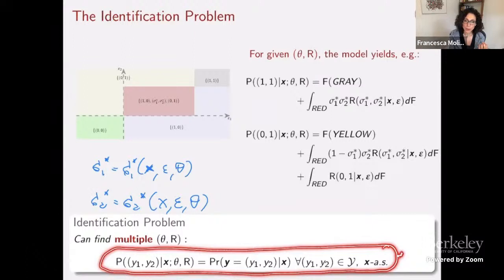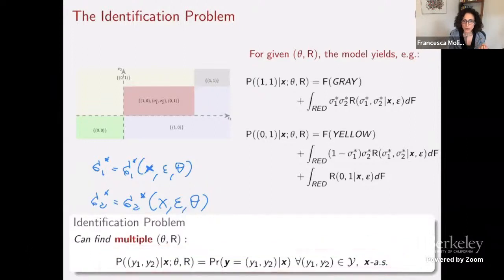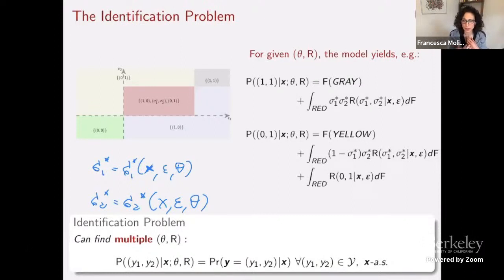However, in practice the selection mechanism is a nasty object — an infinite dimensional nuisance parameter that can depend on x, epsilon, and theta. We don't want to take a stand on what this selection mechanism is. The main thing I want to show you today is that there are tools in the mathematical toolkit that allow us to bypass this selection mechanism entirely, so that we don't need to do computations related to it.